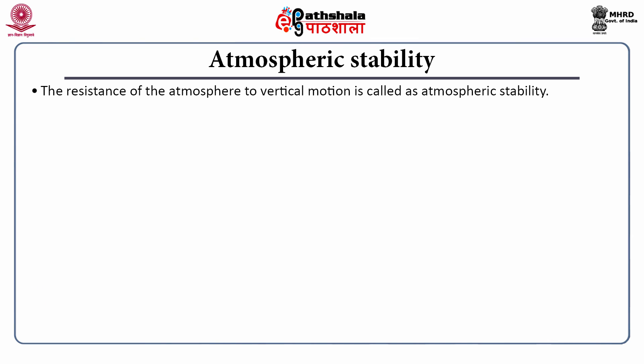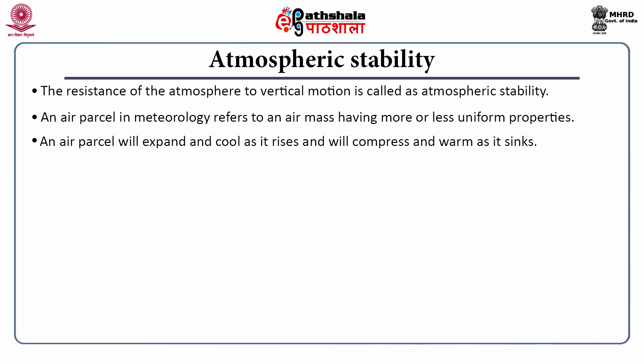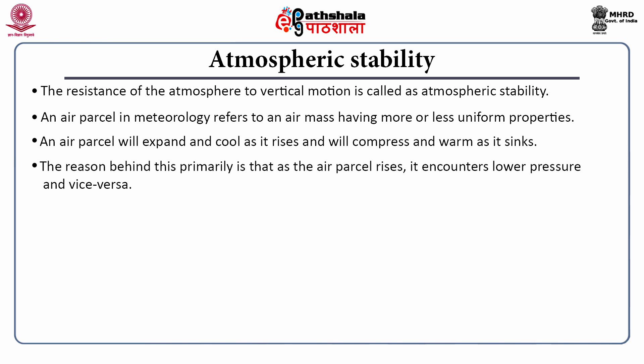The resistance of the atmosphere to vertical motion is called atmospheric stability. An air parcel in meteorology refers to an air mass having more or less uniform properties. An air parcel will expand and cool as it rises and will compress and warm as it sinks, primarily because as the air parcel rises, it encounters lower pressure, and vice versa.